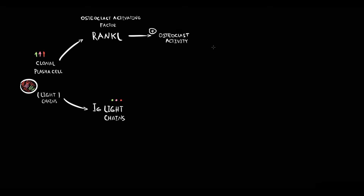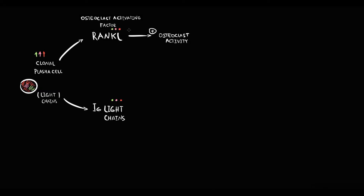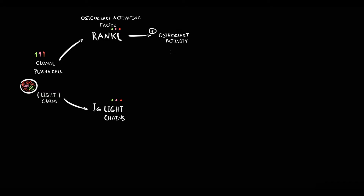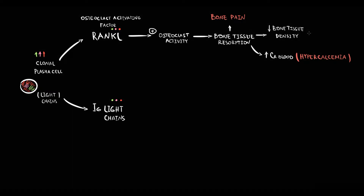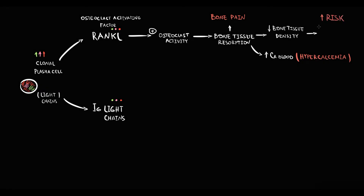Because there are a lot of malignant plasma cells, the production of RANKL is huge. RANKL is an osteoclast activating factor that acts on the RANKL receptor on osteoclasts and activates them. Because there are a lot of RANKL molecules, the stimulation of osteoclasts is huge. And in response to such strong stimulation, osteoclasts very rapidly begin to destroy bone tissue. The resorption of bone tissue causes excess calcium to move from the bone compartment into the blood, resulting in hypercalcemia. Bone destruction frequently causes bone pain, but the major problem is that with decreasing calcium in bone tissue, bone density decreases, bone tissue becomes weak, and this greatly increases the risk of pathological fractures.